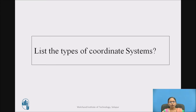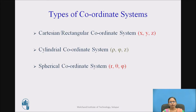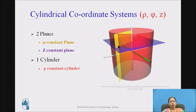Before moving further, let us revise and list the types of coordinate systems. Types of coordinate systems are: Cartesian or rectangular coordinate system having coordinates x, y, z; cylindrical coordinate system with rho, phi, z; and spherical coordinate system with r, theta, phi.